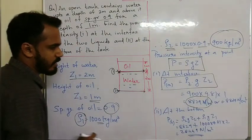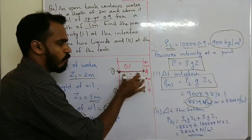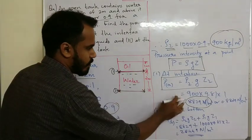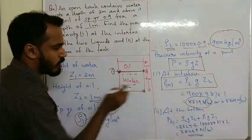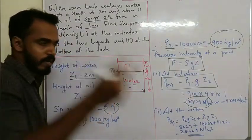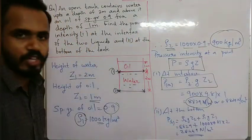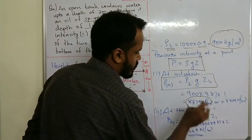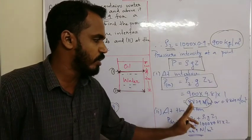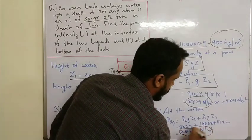At the bottom, the pressure includes contributions from both oil and water. Pressure at bottom = rho2 × g × Z2 + rho1 × g × Z1 = (900 × 9.81 × 1) + (1000 × 9.81 × 2) = 28,449 N/m². This concludes the problems on hydrostatic law.